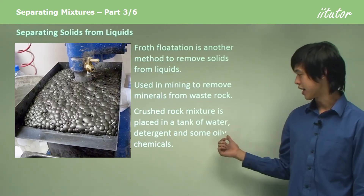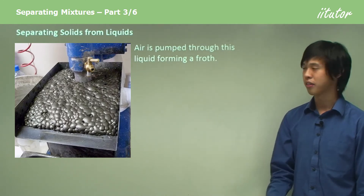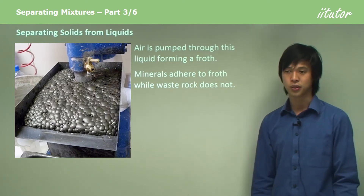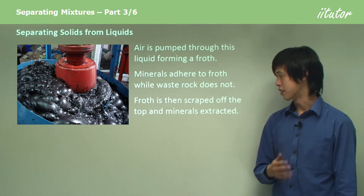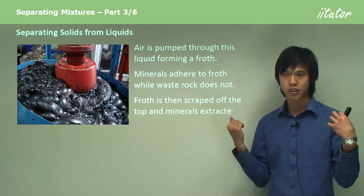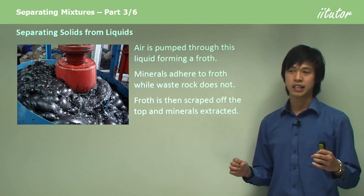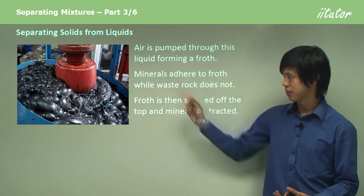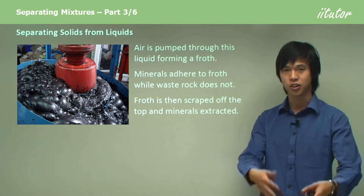In froth flotation, crushed rock is placed in a tank of water, detergent, and some oily chemicals, and air is pumped through, forming a froth. Minerals adhere to the froth while waste rock does not — it falls to the bottom. The minerals accumulate at the top and the froth is scraped off to extract them. As you can see in this picture, the minerals adhere to the bubbles and rise to the top.